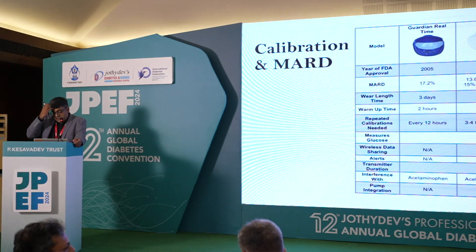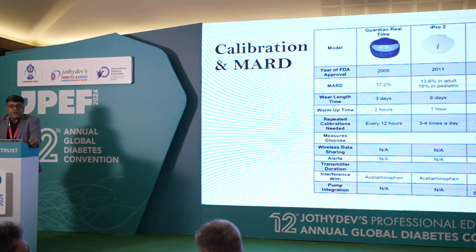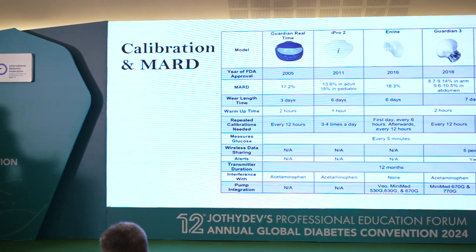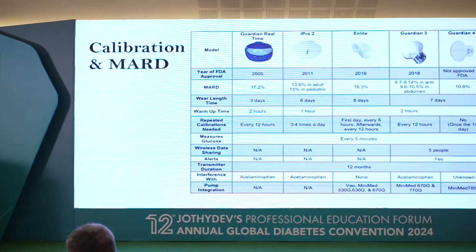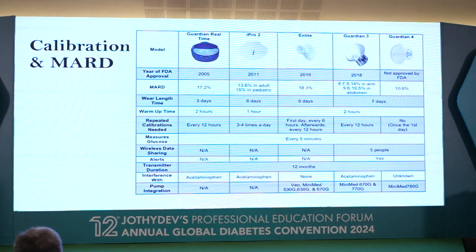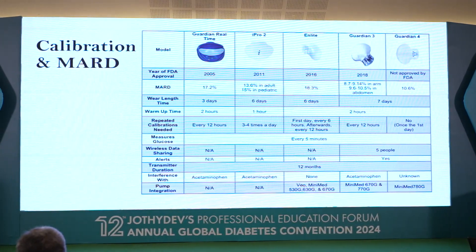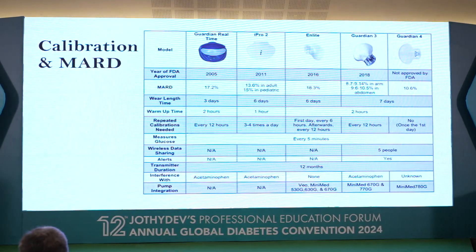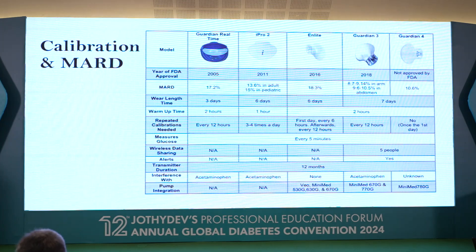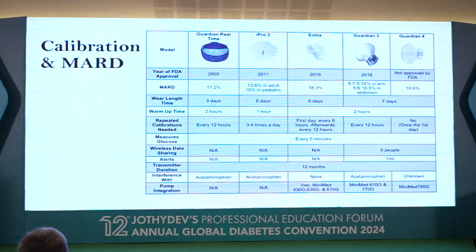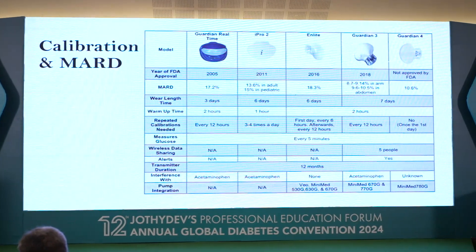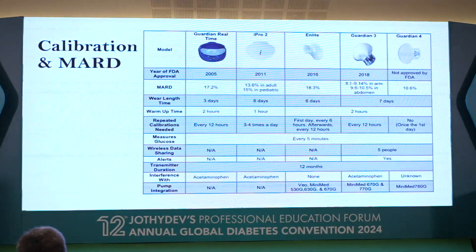Some CGM devices need to be calibrated while others do not. MARD is the parameter used to test the accuracy of a CGM device. Earlier devices had a MARD of 12–14%; recent devices are coming with a MARD of less than 10%, which is the ideal. The devices we currently have available do not have MARD less than 10%, but the latest devices do. For Medtronic devices, the MARD of the Guardian 3 is around 9%, which is acceptable. The sensor life is 7 days and there is a warm-up time of 2 hours. Substances like acetaminophen can interfere with readings on the Medtronic device.